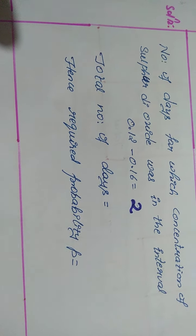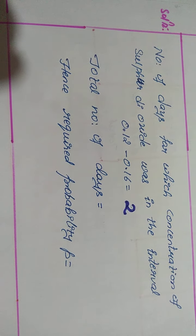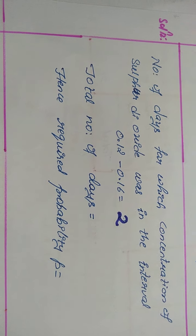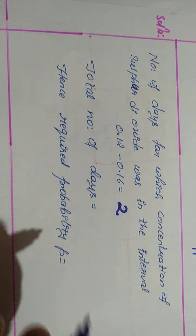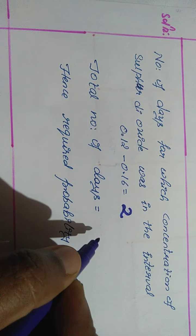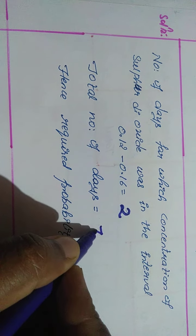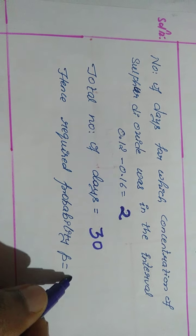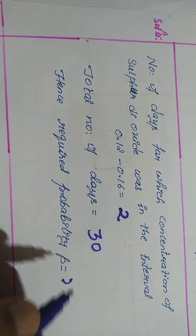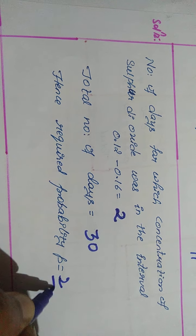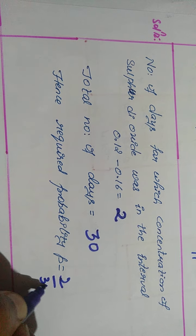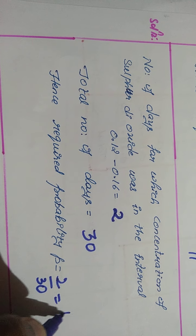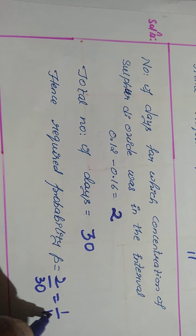On tabulation, we got 0.12 to 0.16 as 2. Number of days — total number of days was 30. Hence, 2 by 30. On cancellation, it becomes 1 by 15.